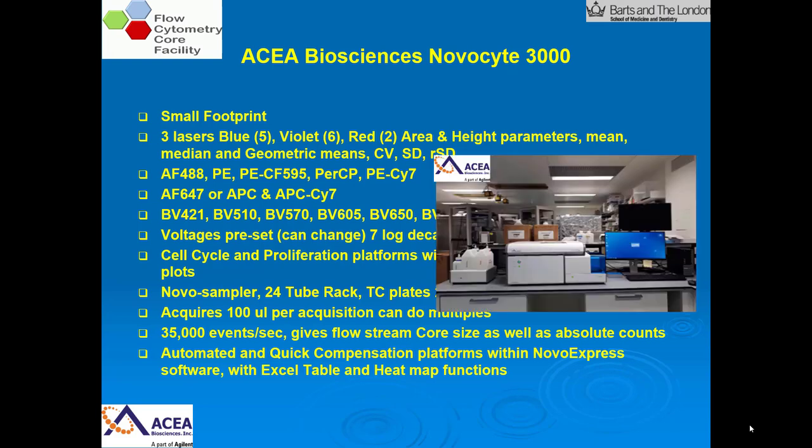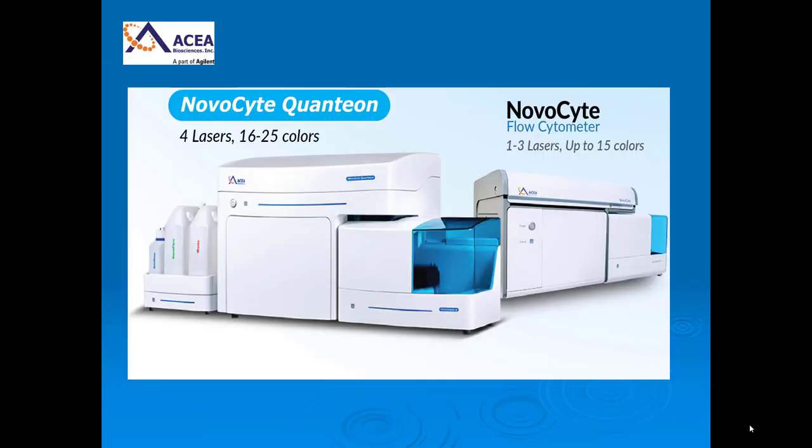This is an image of my machine on an ordinary lab bench. The new NovoCyte machine is called the Quanteon; it has a yellow-green laser and can measure 25 colors.